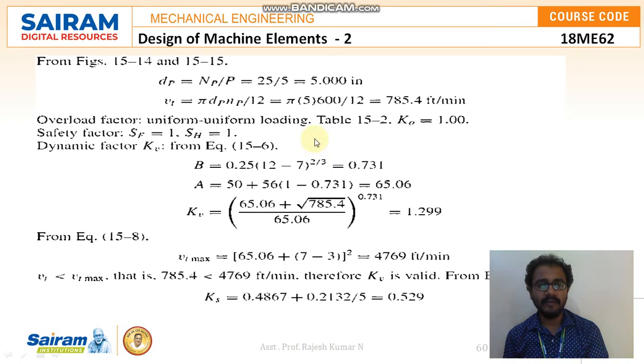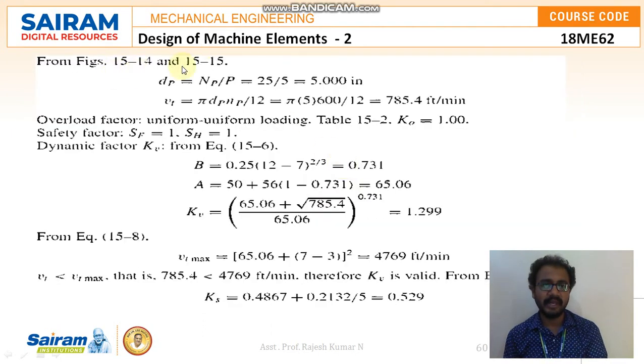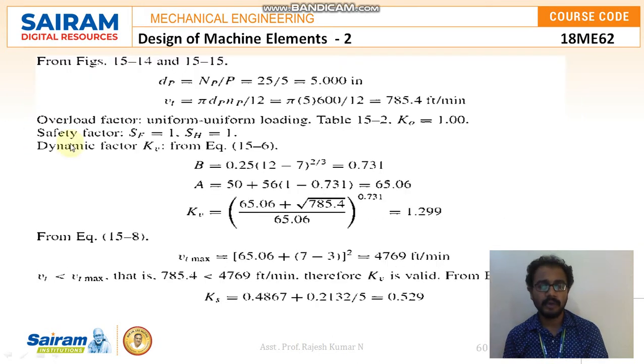Along with this particular problem, even sketches also given. In case sketches not given, no issues. From the design data handbook chapter 15 we can take it down from the sketches 15.14 and 15.15. The pitch diameter which is equal to NP by P, that is the value I am getting. Everything here I will be calculating in terms of inches. If you are not okay with the inches you can even convert that into MM. You people should be aware whether it is given in inches, centimeter or MM, whatever thing you should be able to solve it.